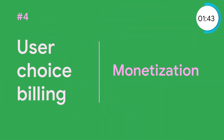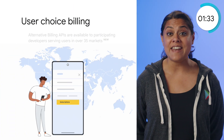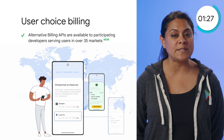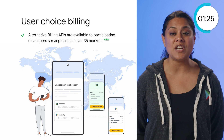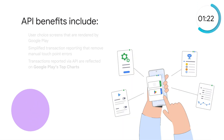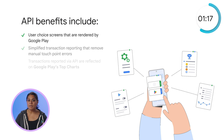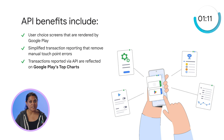Moving on to monetization — monetizing on Play is easier than ever. Today, all eligible developers enrolled in user-choice billing can offer an alternative billing system right alongside Google Play's. The alternative billing APIs, which streamline the developer experience, are now available to participating developers serving users in over 35 markets. API benefits include user-choice screens rendered by Google Play, simplified transaction reporting that removes manual touchpoint errors, and transactions reported via the API are reflected on Google Play's top charts.